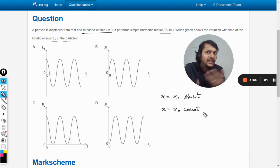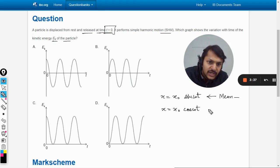The sine function is used if at t equals zero, if the motion starts from the mean position. If the motion starts from the extreme position, you use cosine.